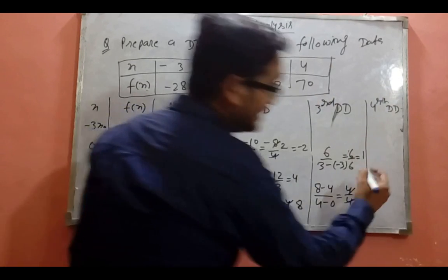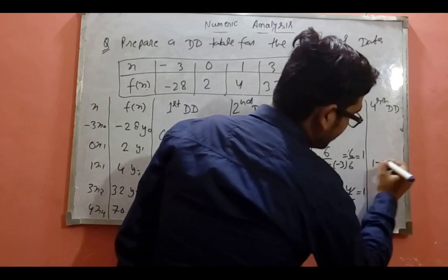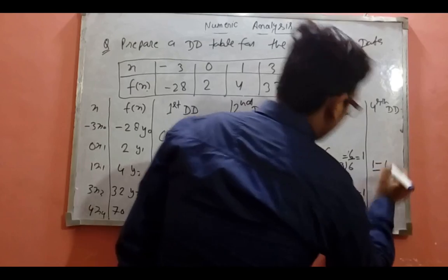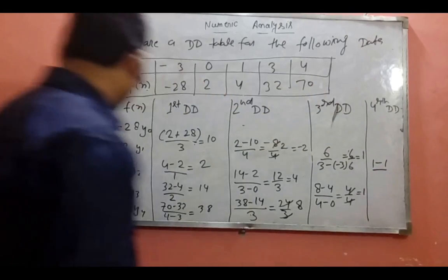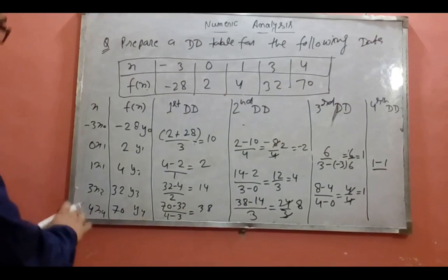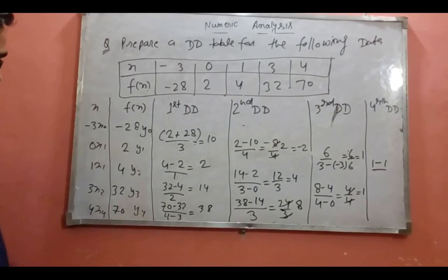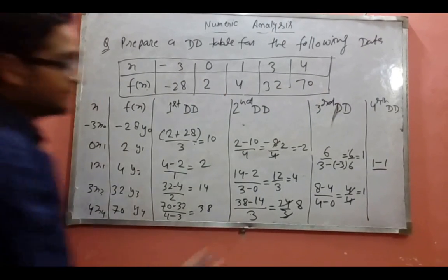Now the fourth divided difference: (1 minus 1) over (4 minus (-3)) = 0.